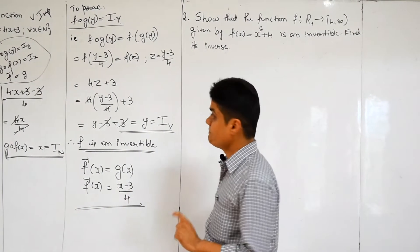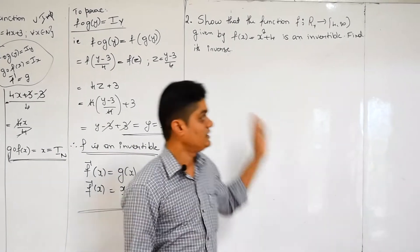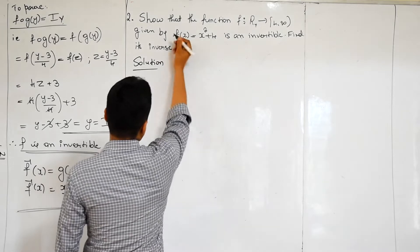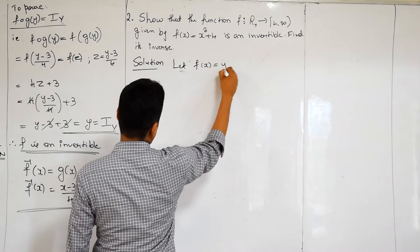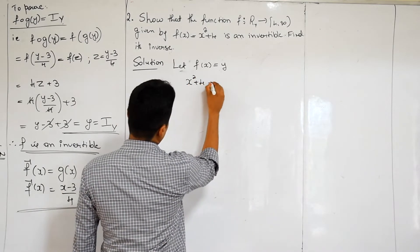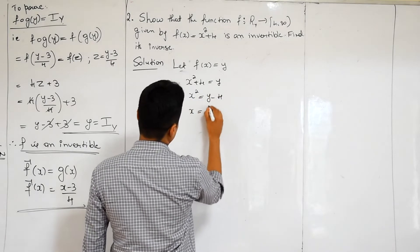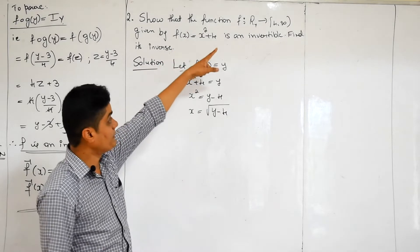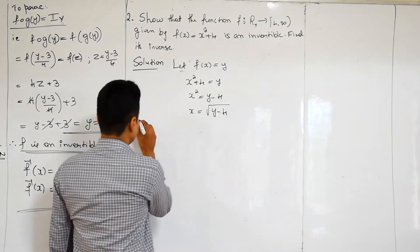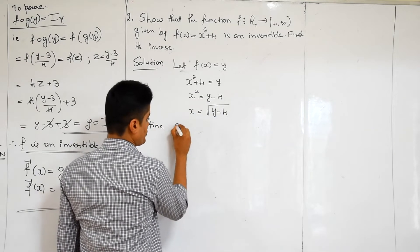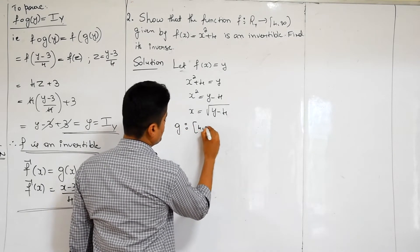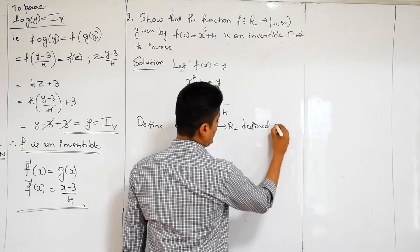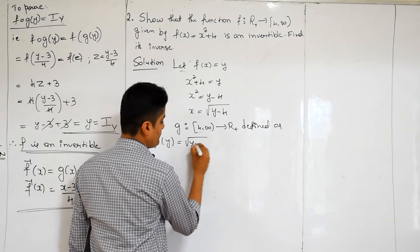The next question is also asked in the final exam for five marks. The procedure is the same. Let f(x) = x² + 4. Setting f(x) = y gives x² = y − 4, so x = √(y − 4). We only take the positive root because the domain is R⁺ (positive real numbers). Define g from [4, ∞) to R⁺ by g(y) = √(y − 4).